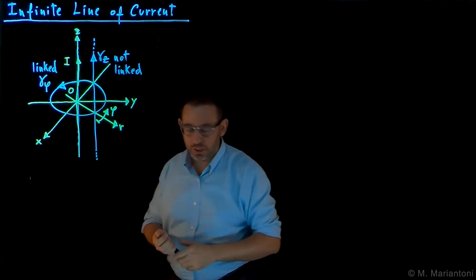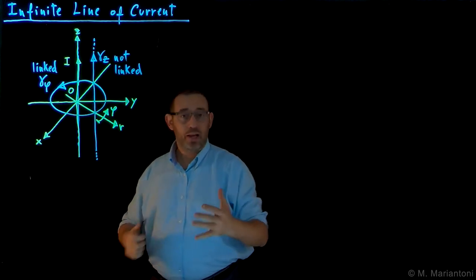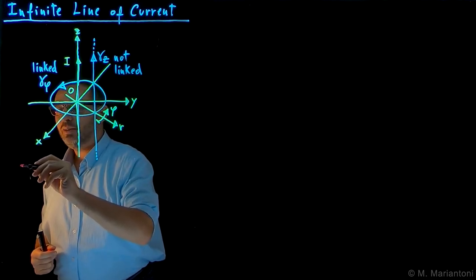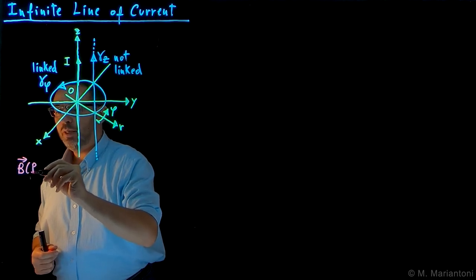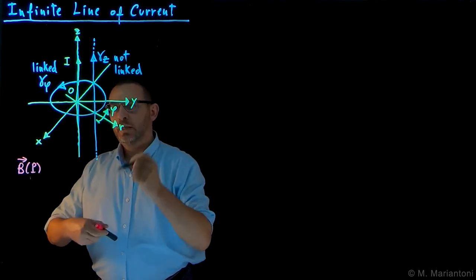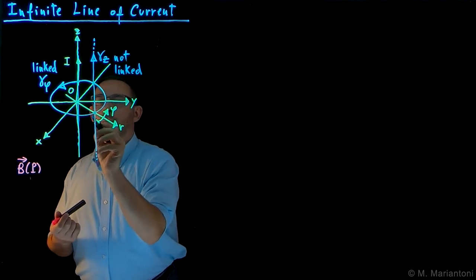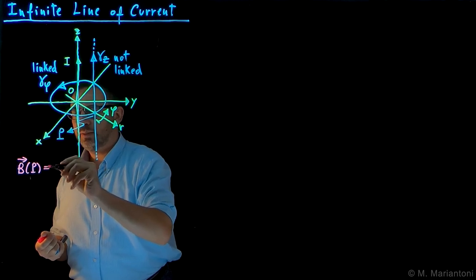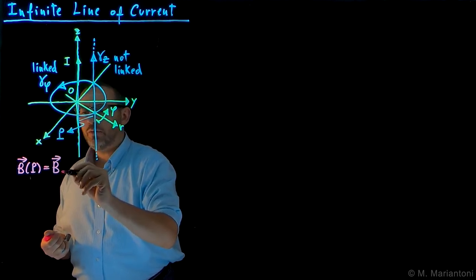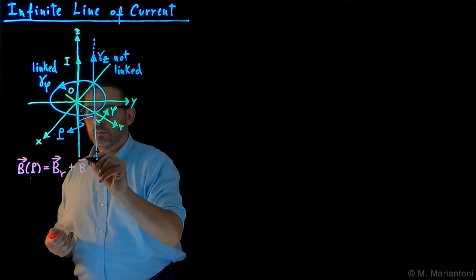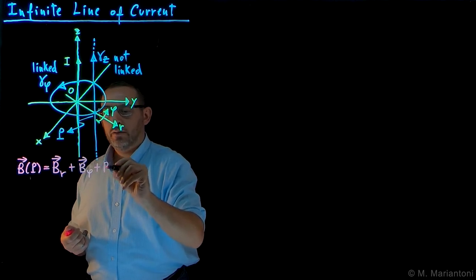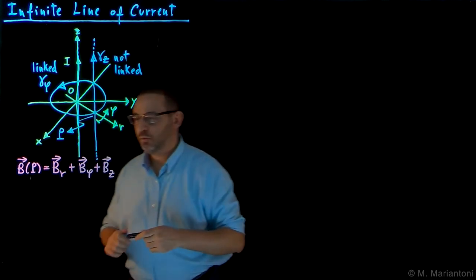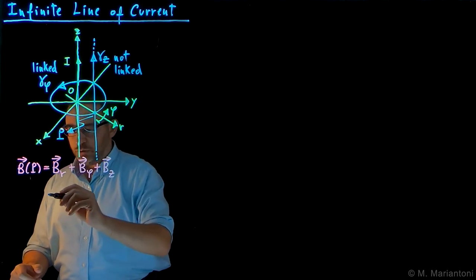Before going there, we want to define the degrees of freedom using only symmetry arguments. We assume zero knowledge whatsoever about the magnetostatic field B at any observation point capital P. In a cylindrical coordinate system, we have in general three components: a radial component Br, a tangential component B bar phi, and a z component Bz. So what are the symmetries associated with this problem? Two of them are exactly the same as for the infinite line of charge.